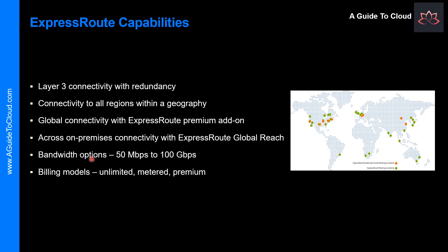Let's look at some of the bandwidth options. You can purchase ExpressRoute circuits for a wide range of bandwidths. Be sure to check with your connectivity provider to determine the bandwidth they support. And there are flexible billing models as well, so you can pick a billing model that works best for you. You can have unlimited data, metered data, or the ExpressRoute premium add-on.